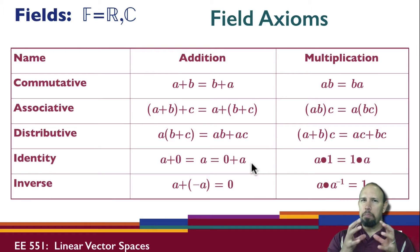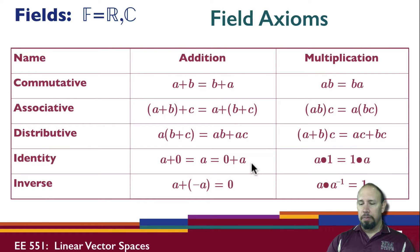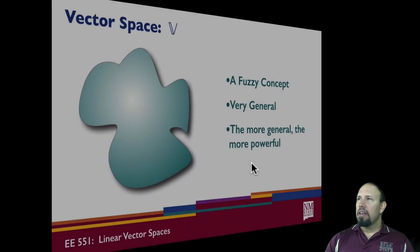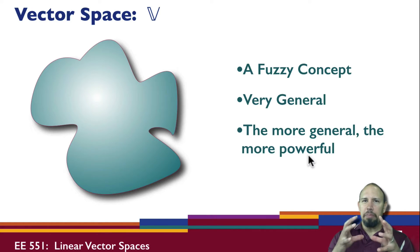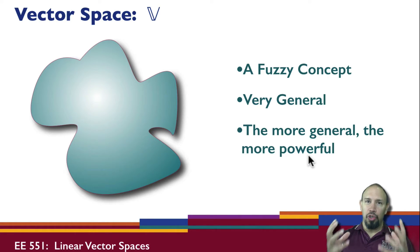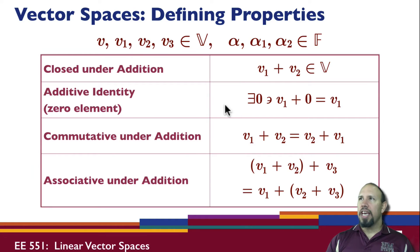A field is a basic set of math elements — in this case, numbers: real numbers, complex numbers. That's an important definition. A vector space is a more fuzzy, very general concept. With math, the more general, the more powerful — if you can say something very general that's true, it can apply to a lot of different things. A vector space is defined in terms of its properties: the vectors are in the vector space, and scalar values are in the field. Whenever you have a vector space, it's defined over a field.